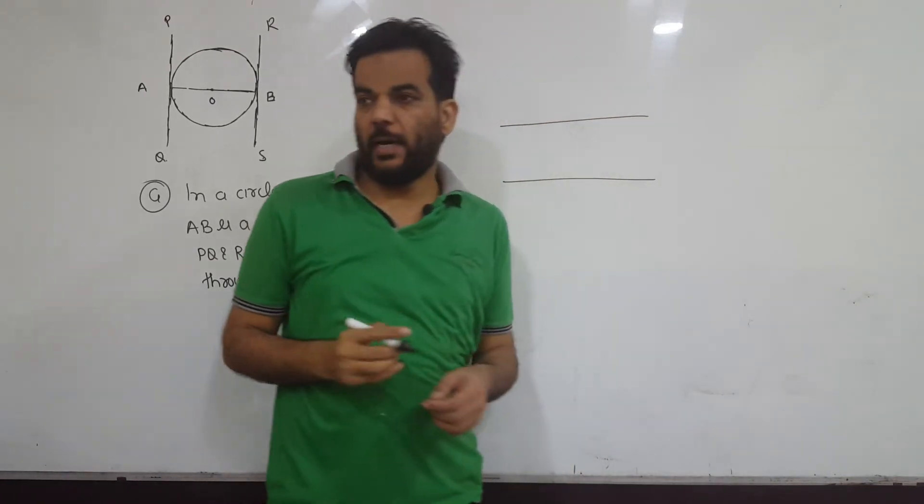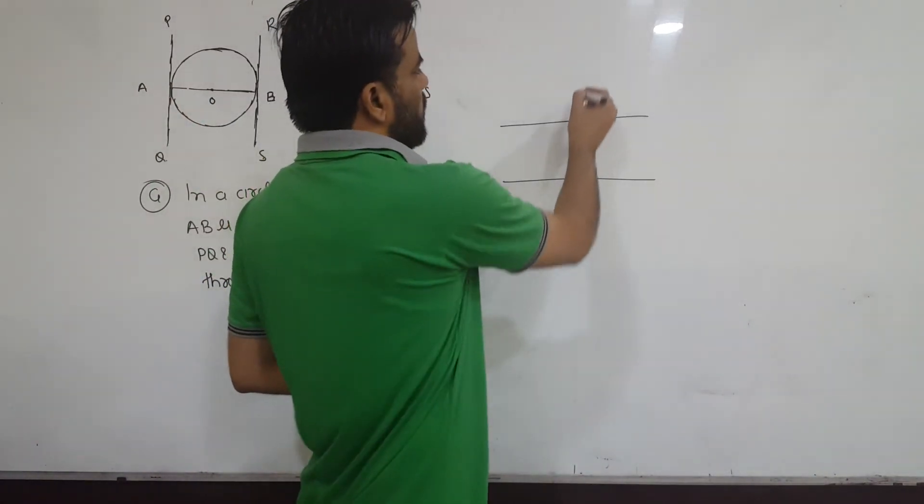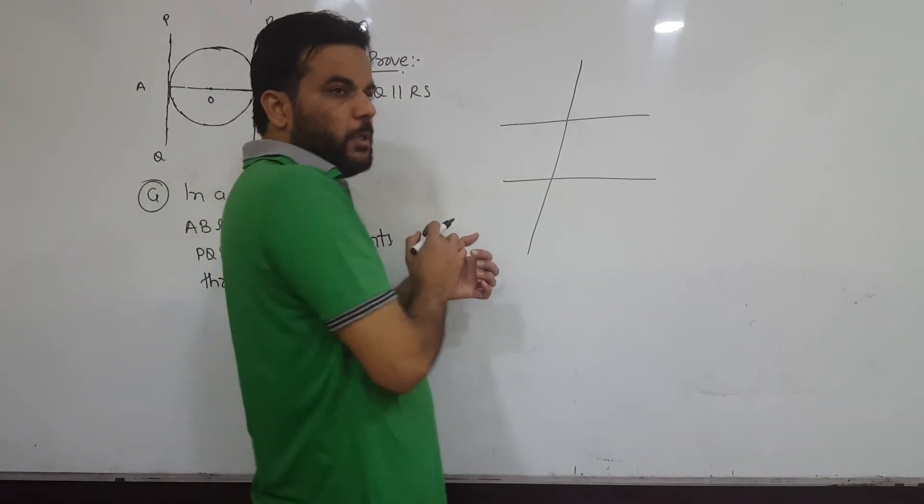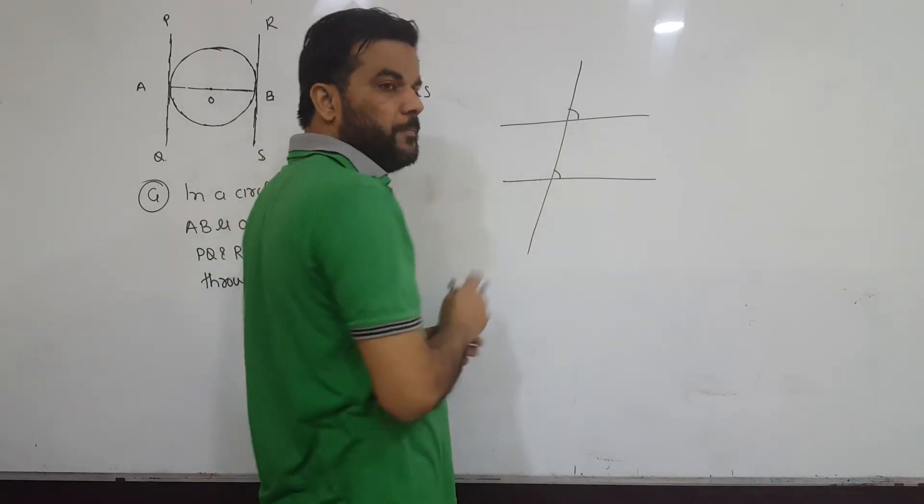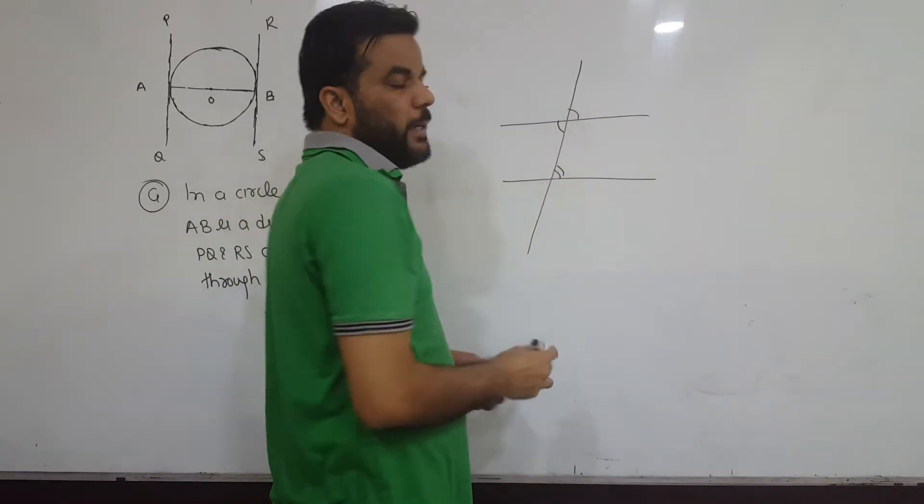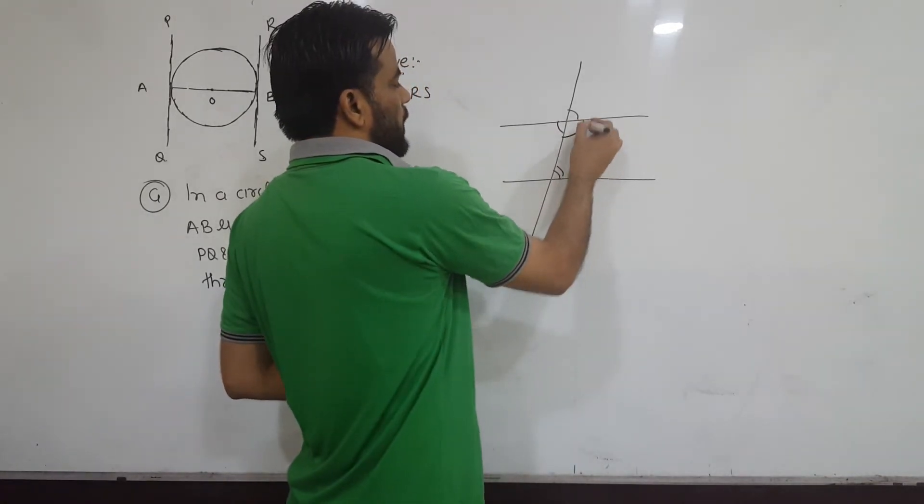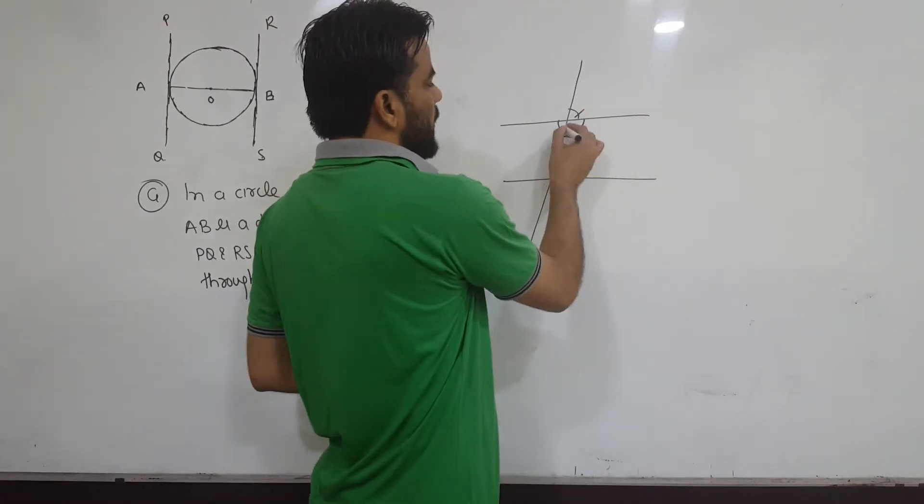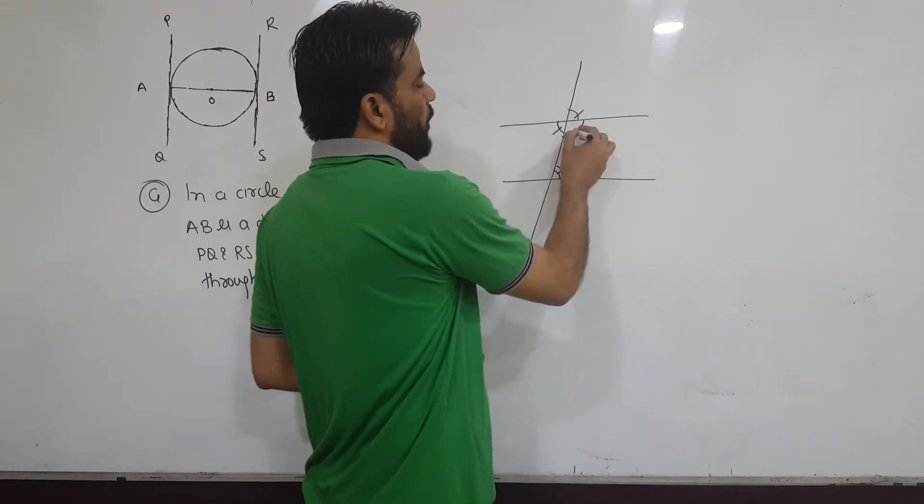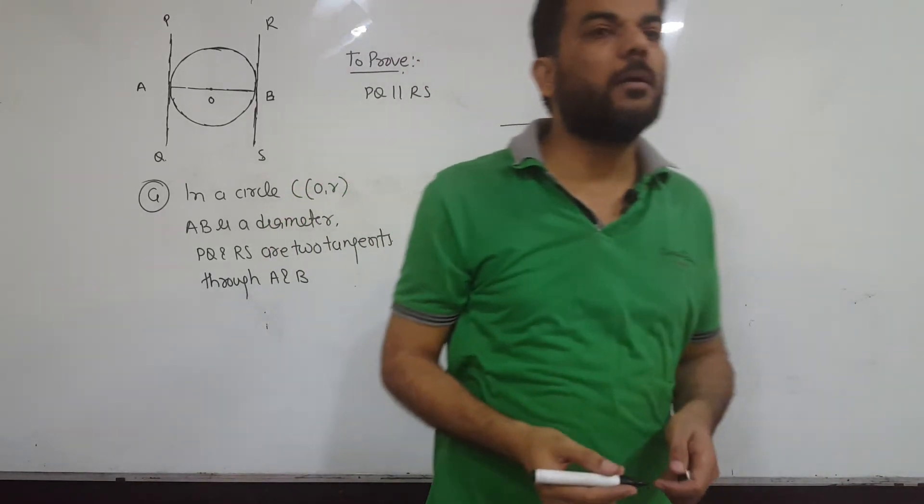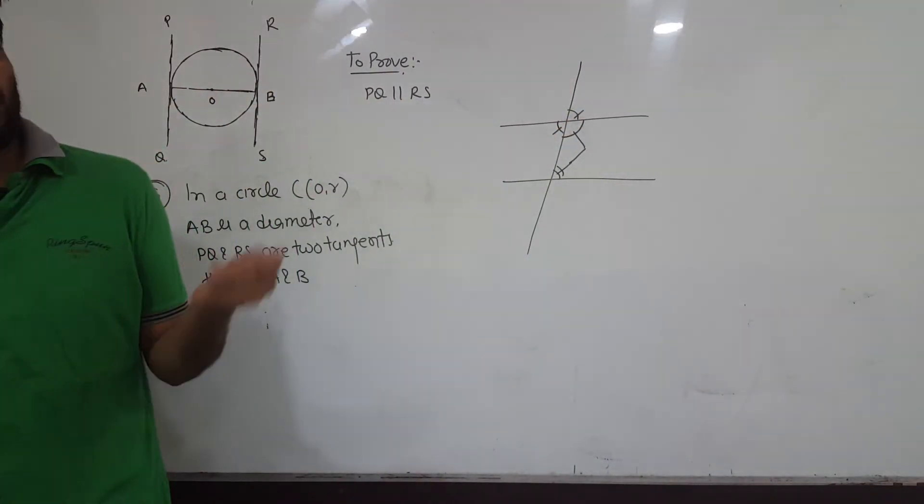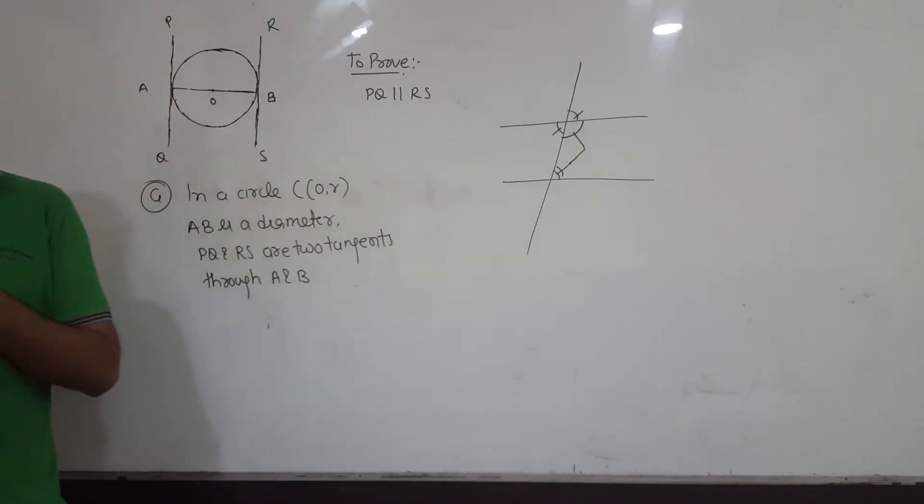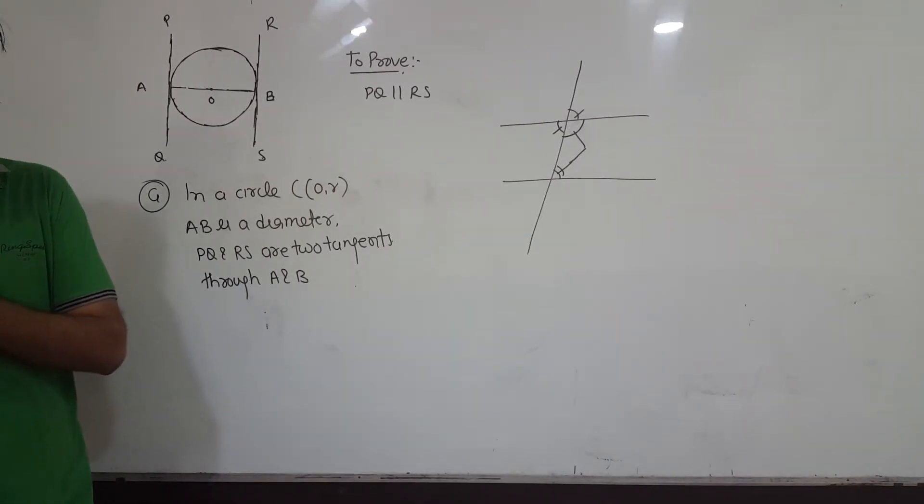To prove two lines are parallel, you have three possibilities. When you have a transversal line, three types of angles are formed: corresponding angles, alternate angles (alternate interior or exterior), and consecutive interior angles. If corresponding angles are equal, lines are parallel. Or if alternate angles are equal, lines are parallel. Or if the sum of consecutive interior angles is 180, lines are parallel. To prove lines parallel, you need one of these three: corresponding angles equal, alternate interior angles equal, or consecutive sum 180.